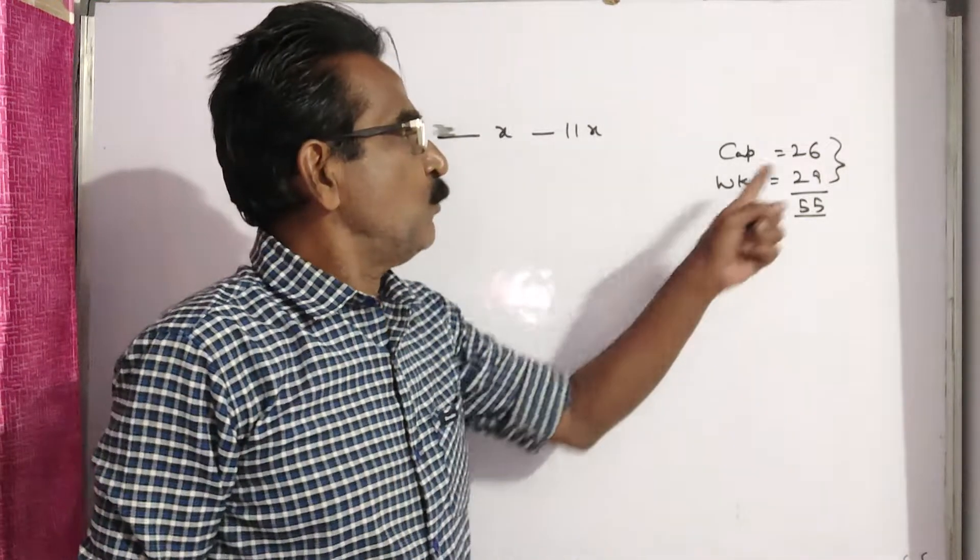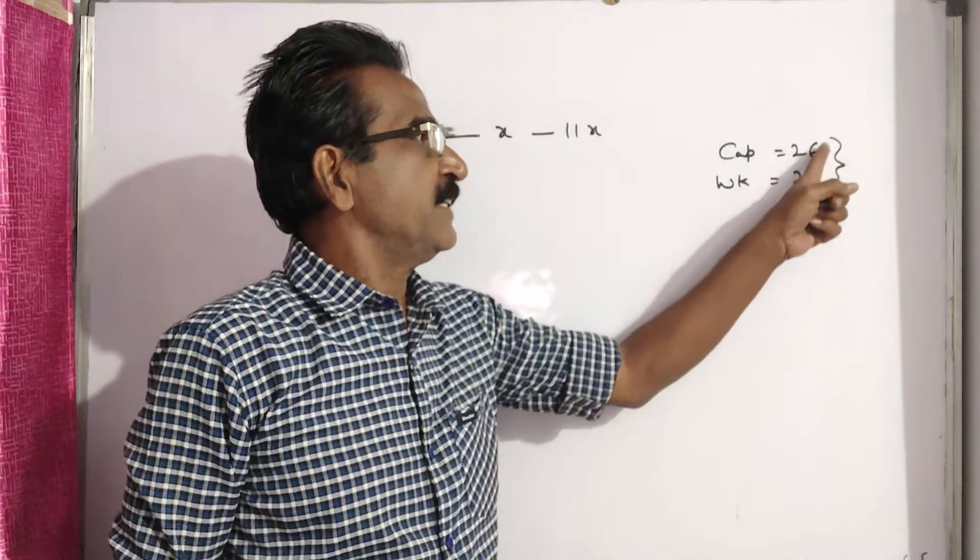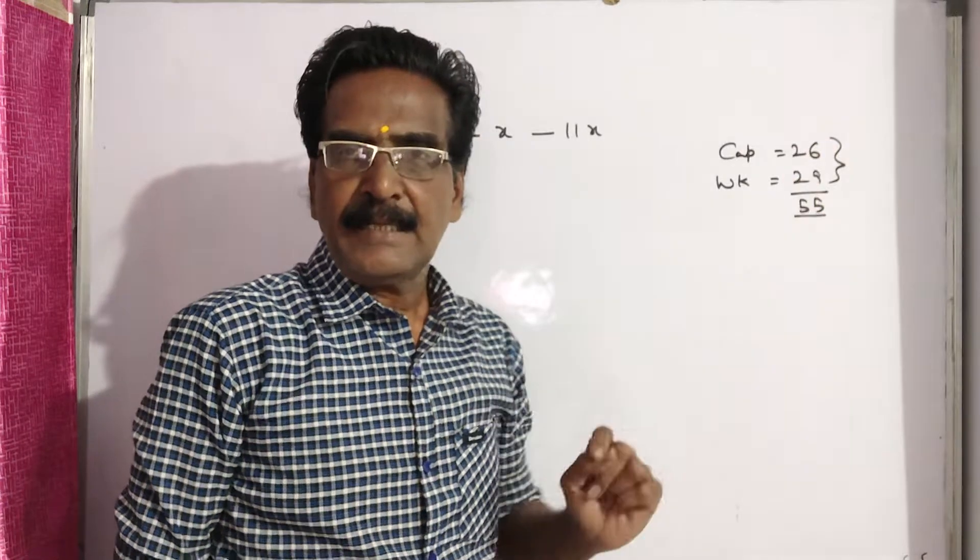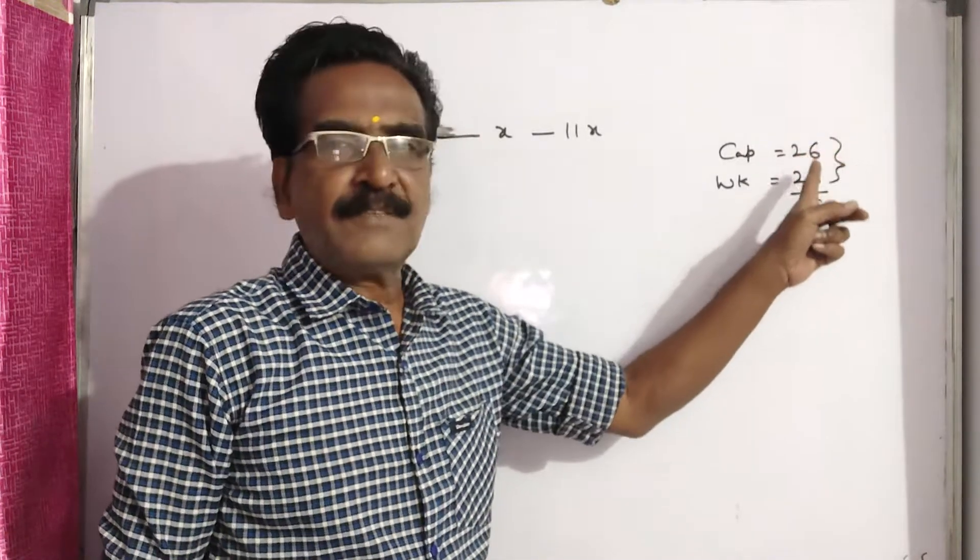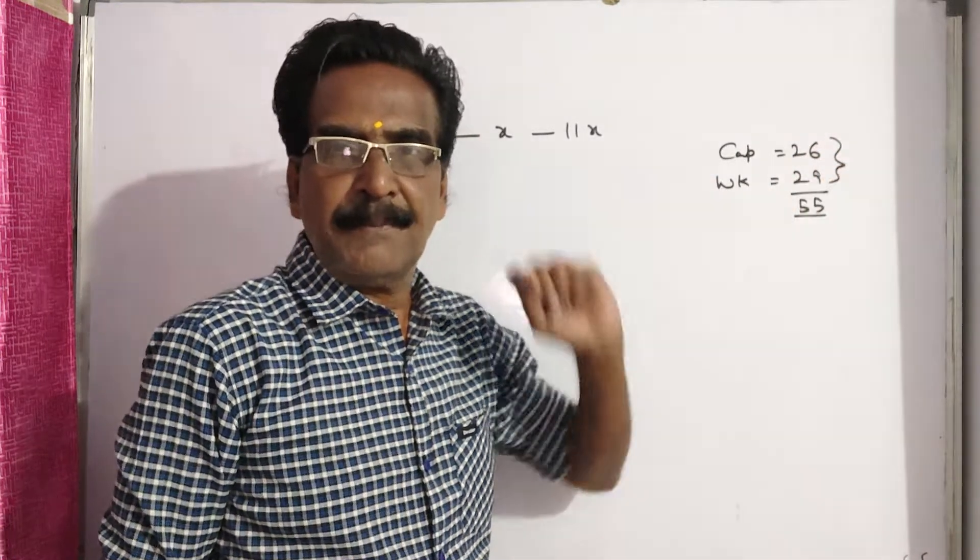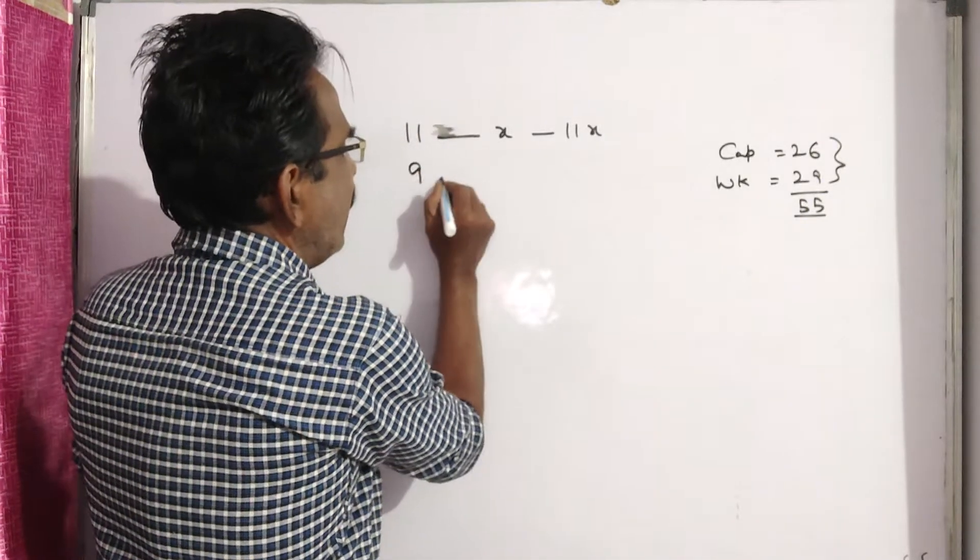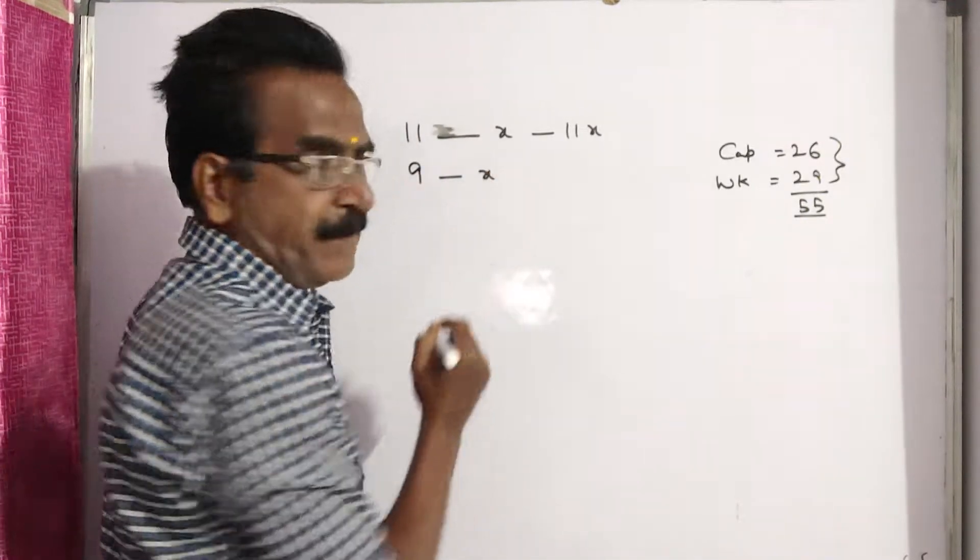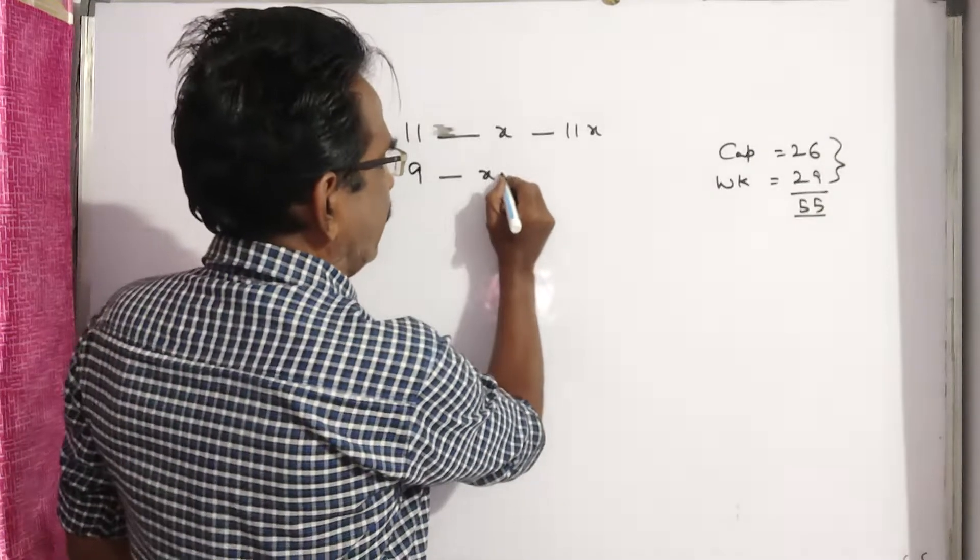Now, two persons are excluded with the ages 26 and 29. With the exclusion of these two members, the average age of the remaining 9 members is decreased by 1.